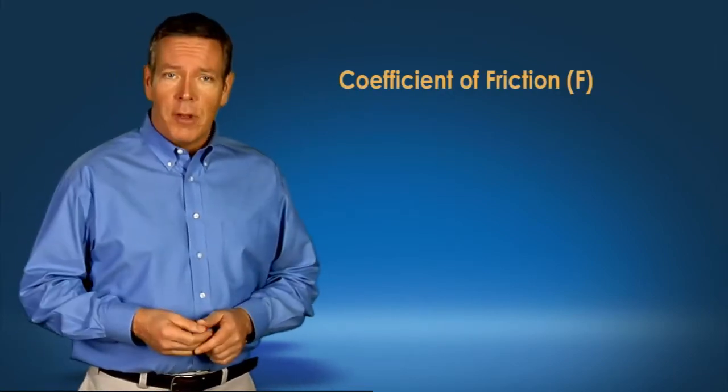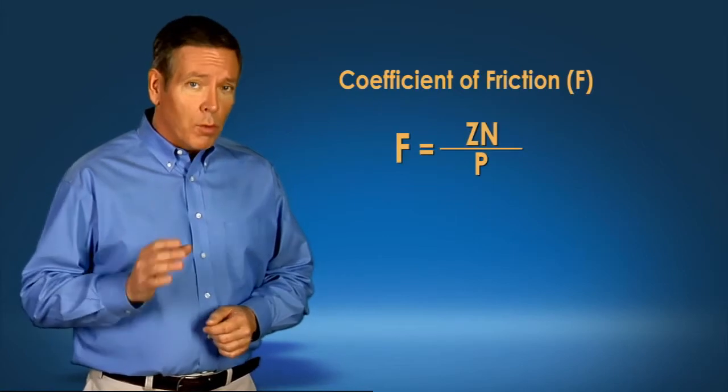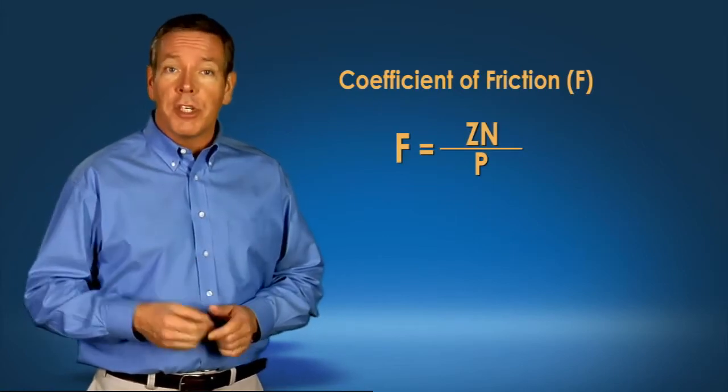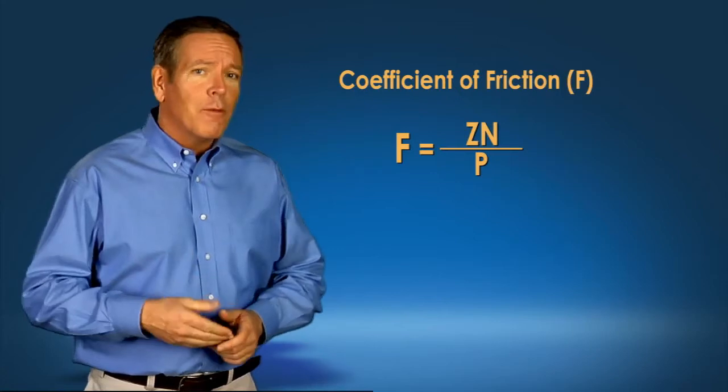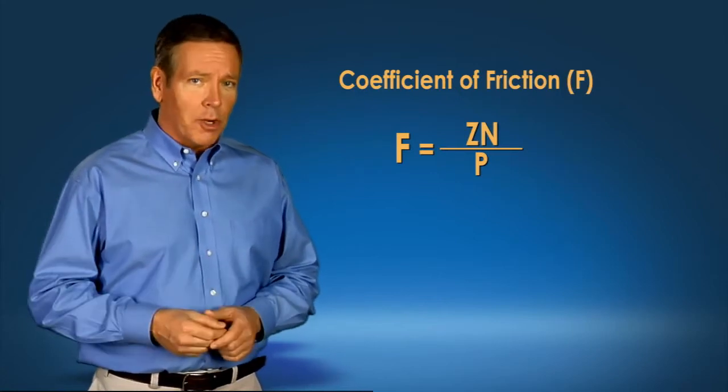The coefficient of friction is found by dividing the force required to move a body over a horizontal surface at constant speed by the force holding the body against the surface.